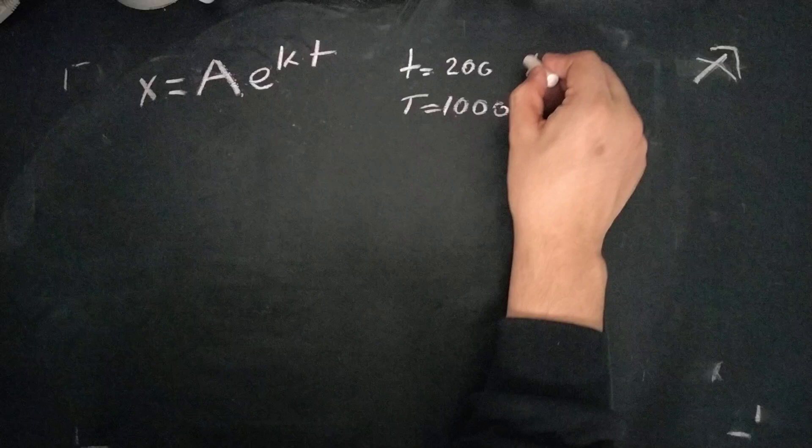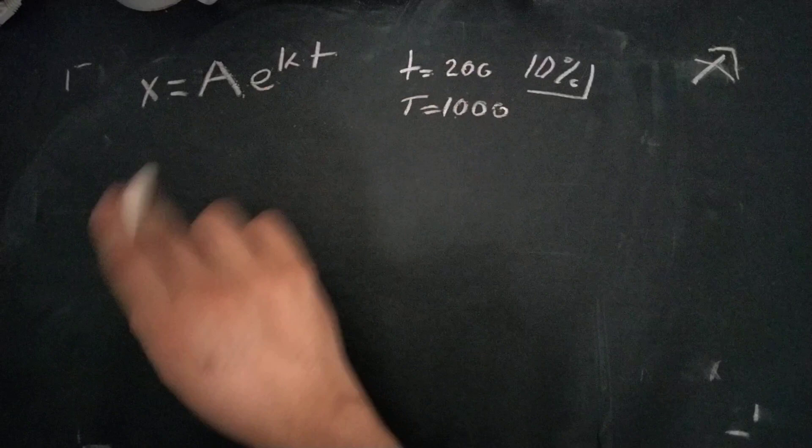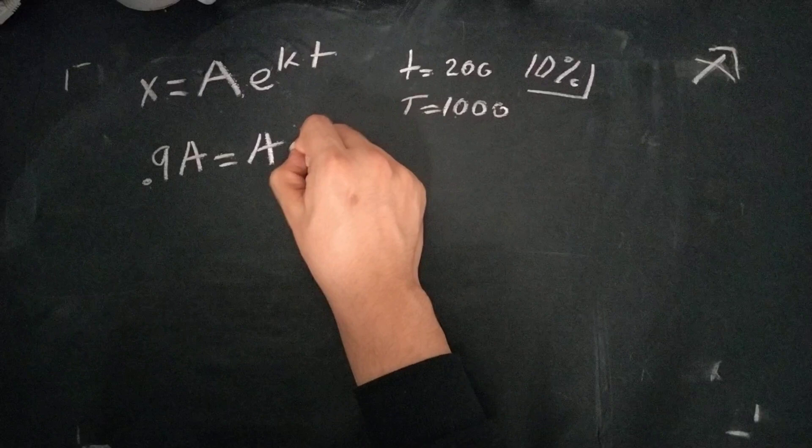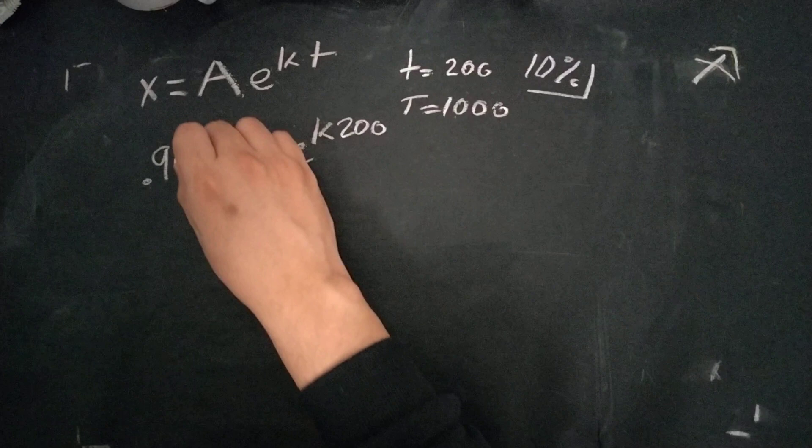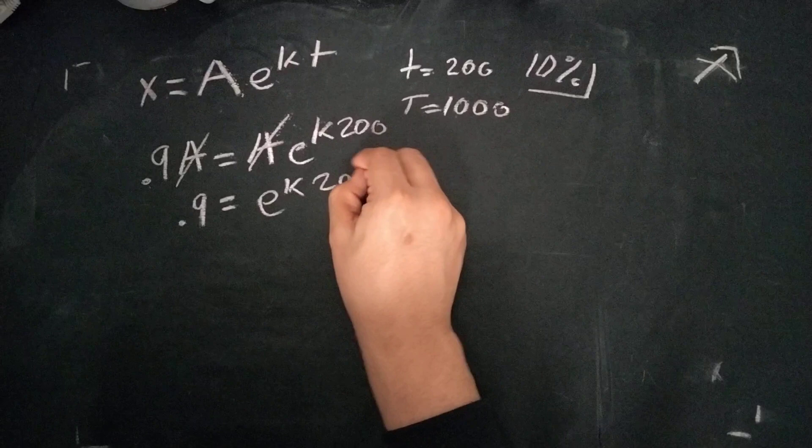So if we know that there's only 10% decomposed, I should clarify. I might have made a mistake there. And that means there's 90% left after 200 years. So the way to write that is, it's 0.9 for 90% A equals to A, E, K, 200. So simple enough. A is cancel. We're left with 0.9 is equal to E to the K, 200 at the time.